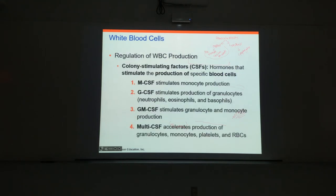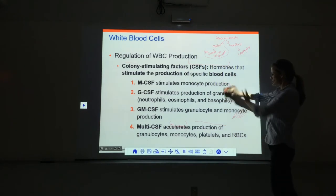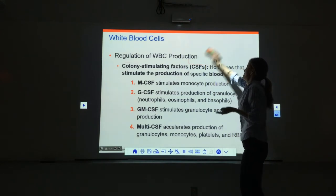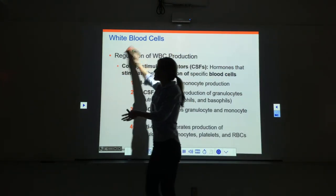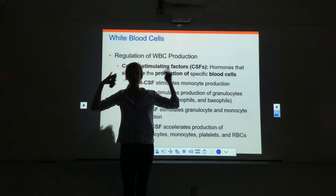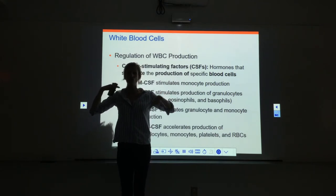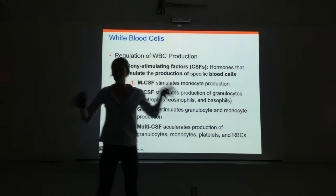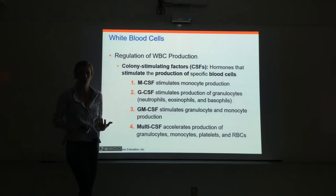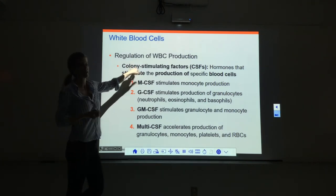Now let's talk about how we control the production of white blood cells. Lymphocytes are different and super complicated — their production requires some sort of exposure to an antigen, and then there are many intermediaries and chemical messengers involved to promote lymphocyte production. The production of all other white blood cells is relatively simple.